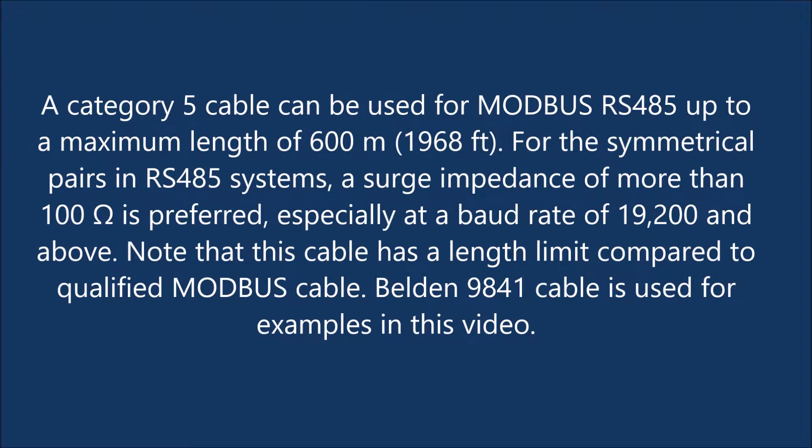A Category 5 cable can be used for Modbus RS-485 up to a maximum length of 600 meters (1,968 feet). For the symmetrical pairs in RS-485 systems, a surge impedance of more than 100 ohms is preferred, especially at a baud rate of 19,200 and above. Note that this cable has a length limit compared to qualified Modbus cable.